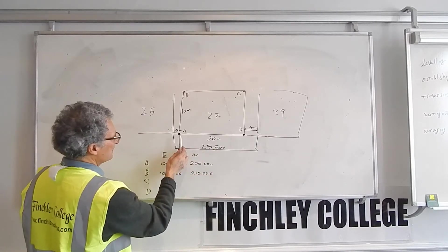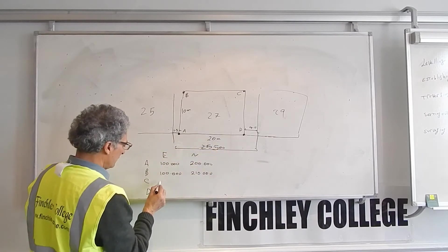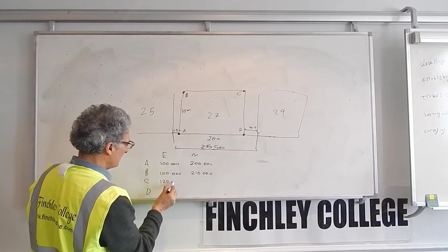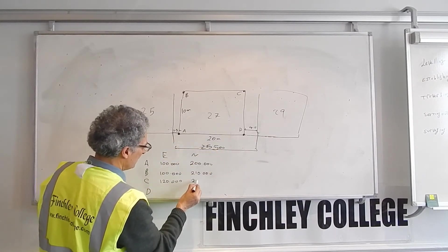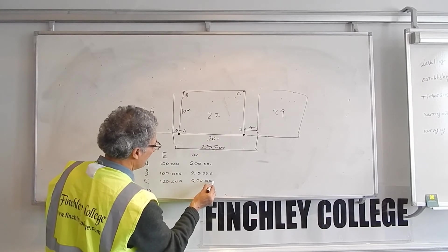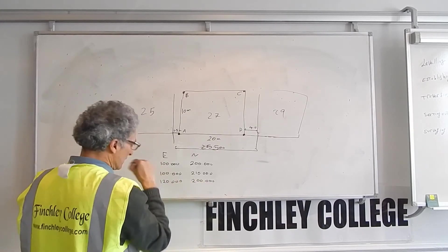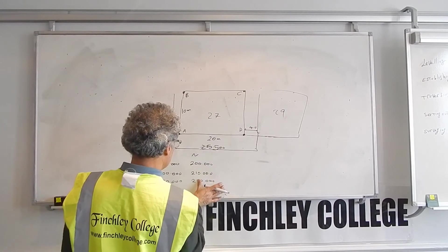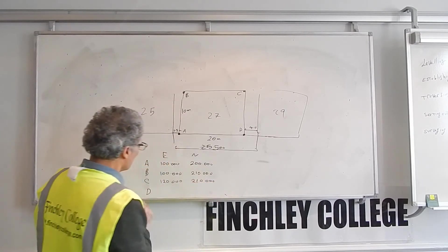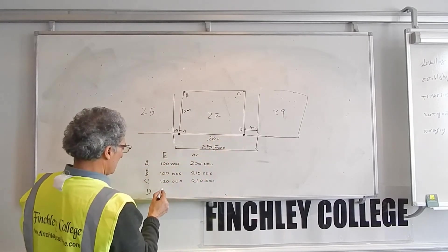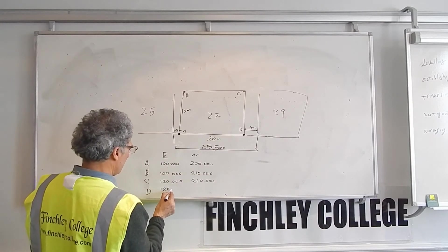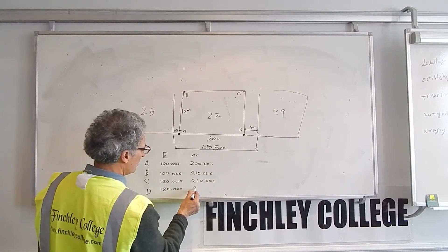C would be easting of 100 plus 20, would be 120 meters, and northing would be 200. And D will be 120, and the northing 200.